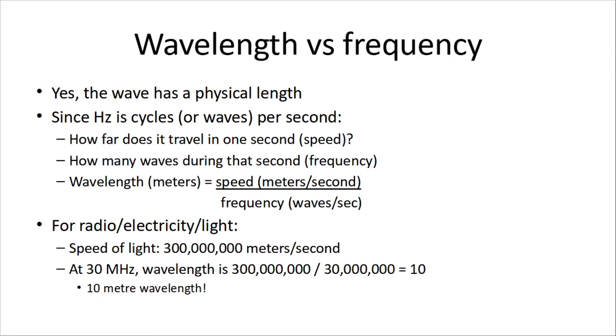Let's just jump right to an example for radio, electricity, and light. That all operates at the speed of light, 300 million meters per second. If you can't remember if it's 300 million or 300,000, it's because sometimes it's expressed in kilometers per second, sometimes it's meters. We stick with meters at 300 million. So, if we've got a signal running 30 megahertz, or 30 million cycles per second, our wavelength is the speed of light, 300 million meters per second, divided by the 30 million waves per second, and that's 10. So, it's a 10-meter wavelength.